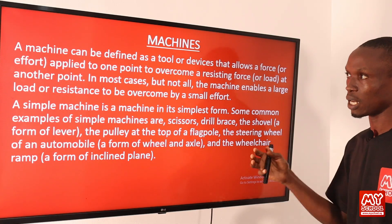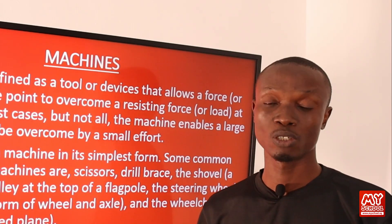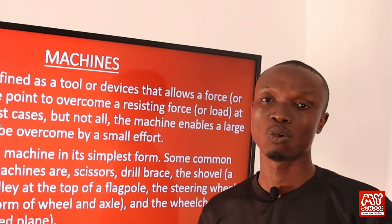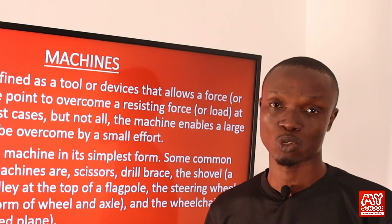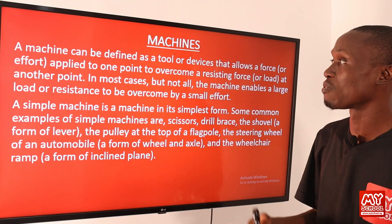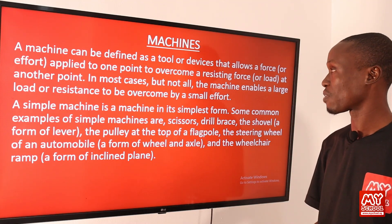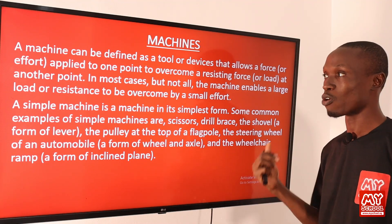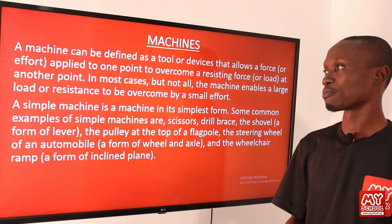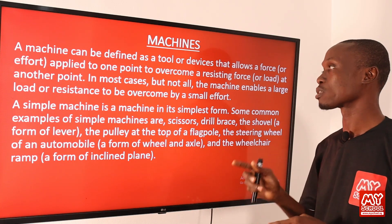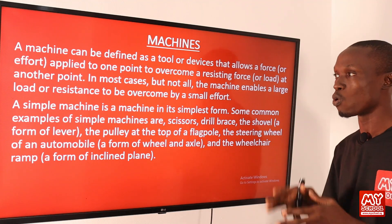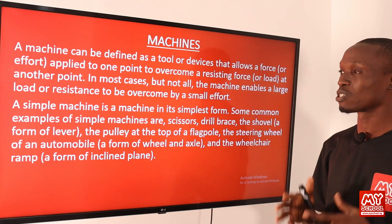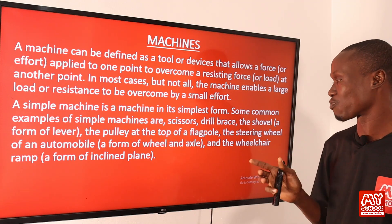In physics, when we talk about a machine, we are not necessarily referring to a complex piece of mechanism. We are simply referring to a device or tool used to do work. So in physics, we define a machine as a tool or device that allows a force applied to one end to overcome a resisting force at another point. In most cases, but not all, the machine enables a load or resistance to be overcome by a small force. A simple machine is a machine in its simplest form.